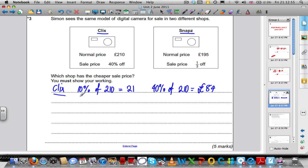So then the sale price must equal 210, subtract 84, which is equal to £126.